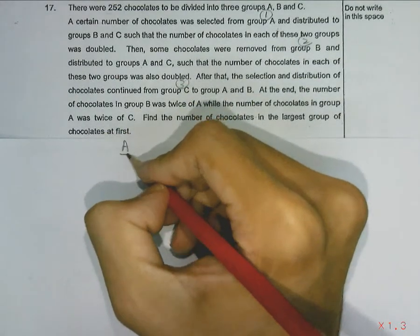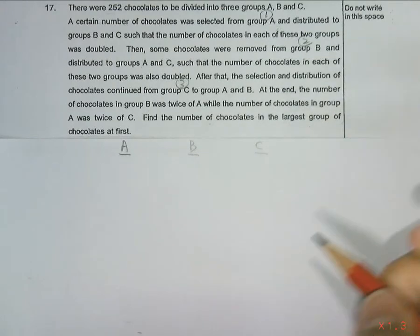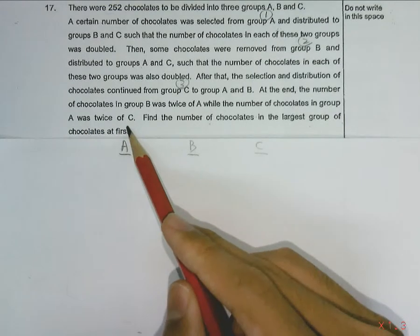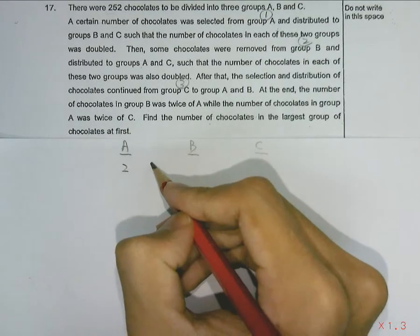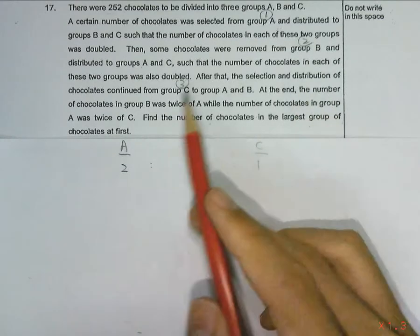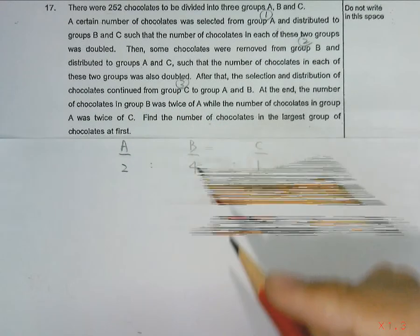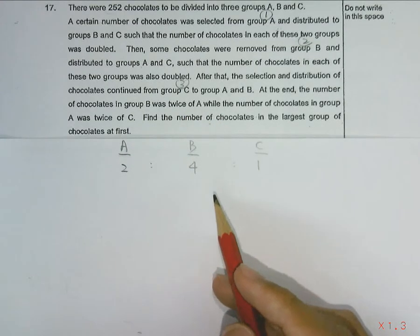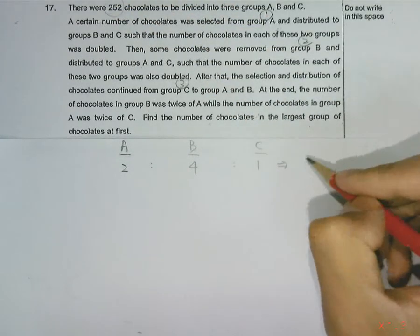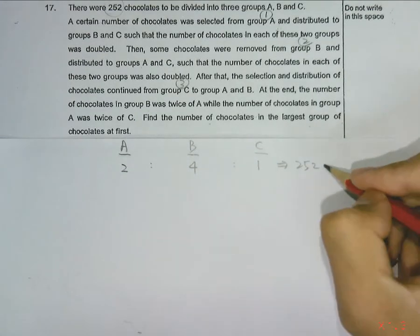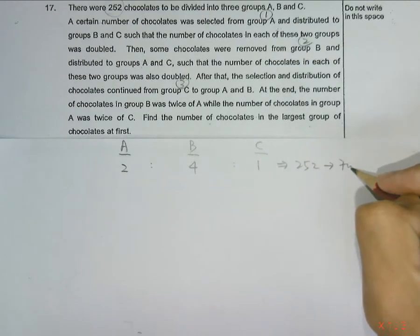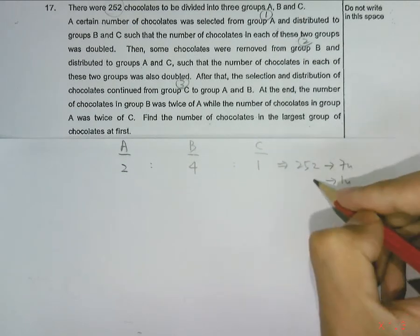So we have groups A, B and C. In the end, the final ratio was that the number of chocolates in group A was twice of C, so A will be twice of C in a 2 to 1 ratio. And B was twice of A, so B will be 4. So this is the final ratio of number of chocolates. Since there were a total of 252, this gives a total of 7 units where 2 plus 4 plus 1 gives 7. So we can find out what 1 unit is, which is 36.